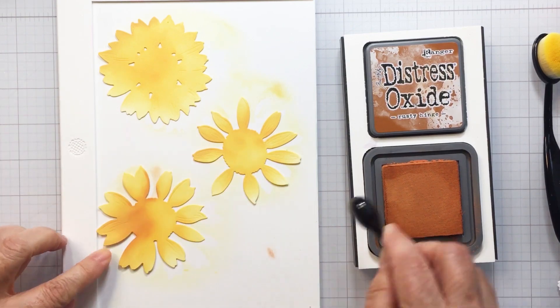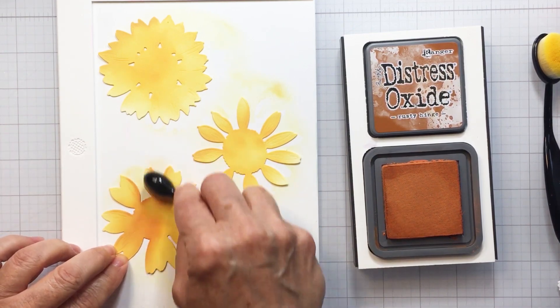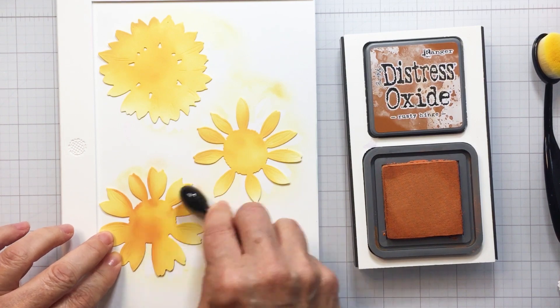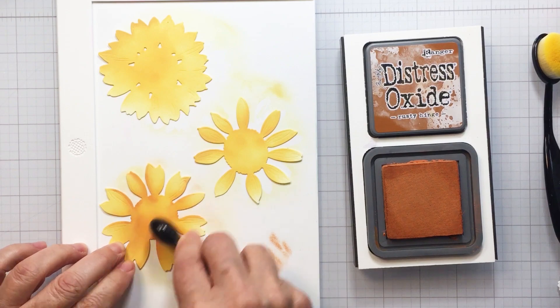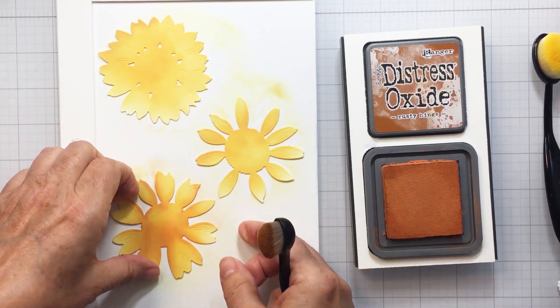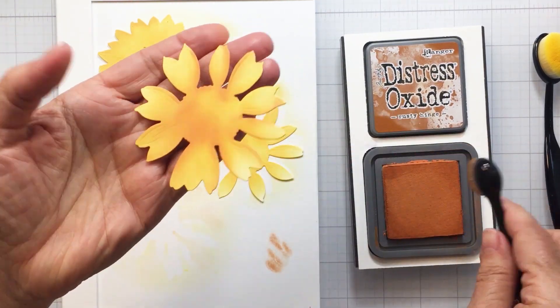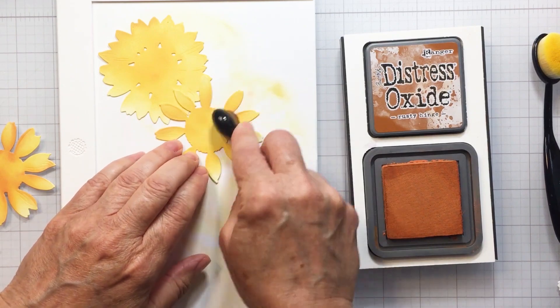Now I'm going in with just a little bit of an orangey brown color here with Rusty Hinge. I love this color so much in the distress line and again with my detail brushes from Honey Bee it's so easy to color up these images. I do have them on my waffle flower media mat or stencil mat here.